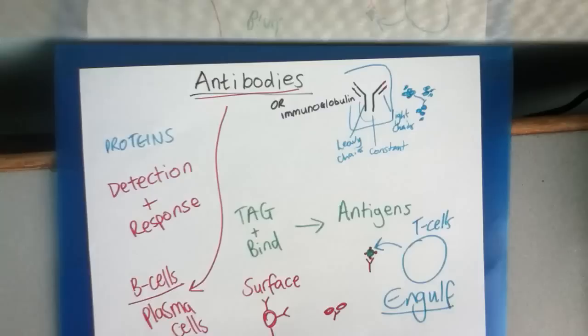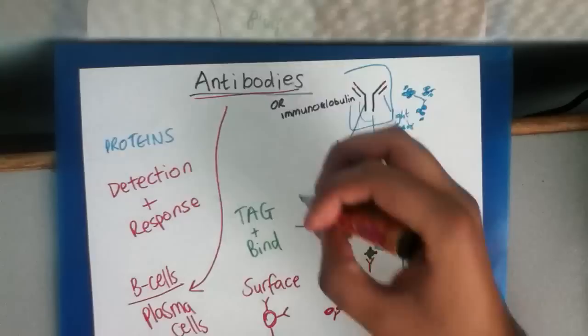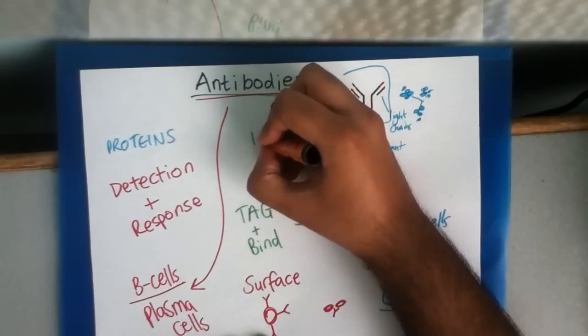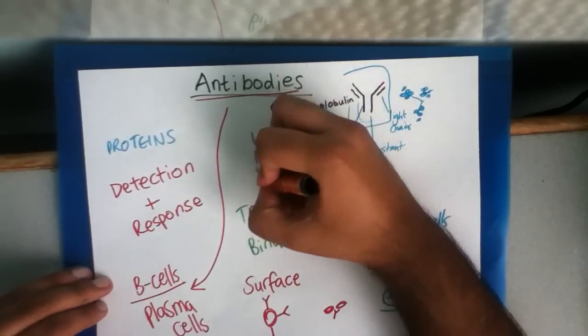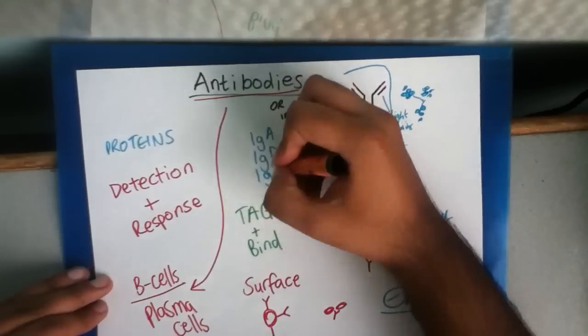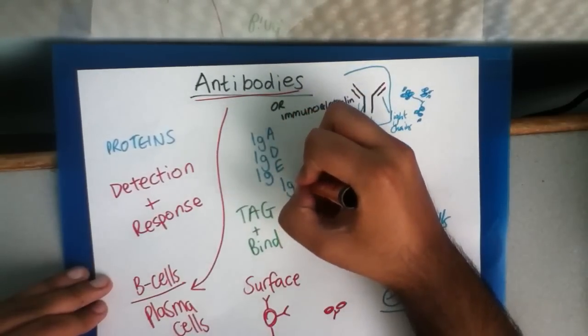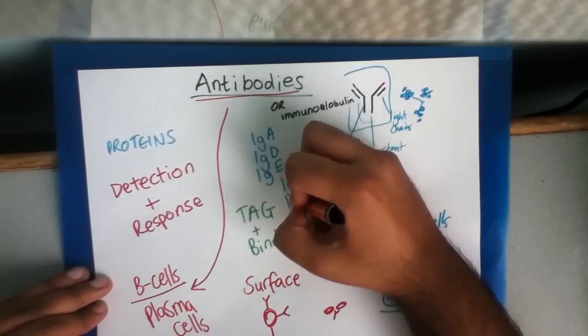These are the main principles of antibodies. You can have different classes of antibodies. They are IgA, IgD, IgE, IgG, and IgM.